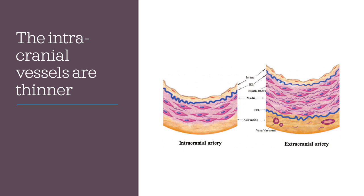A key difference between intracranial and extracranial vessels: intracranial vessels are much thinner. The media is much smaller, there is no external elastic lamina, elastic fibers in the media are vastly reduced, and there is no vasa vasorum because the thin vessel gets its oxygenation directly from flowing blood. This means these vessels are more prone to rupture, so when planning balloon dilatation, we must undersize the balloon to avoid disaster.